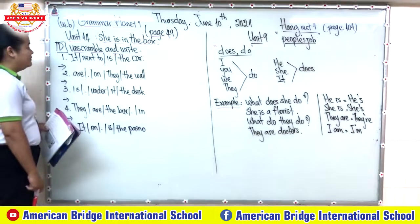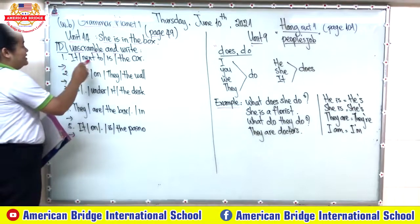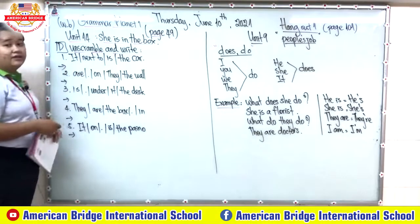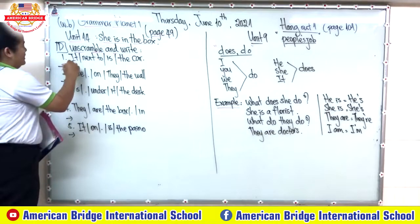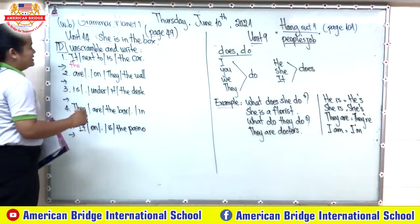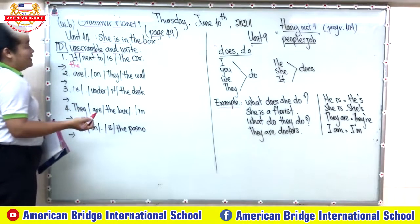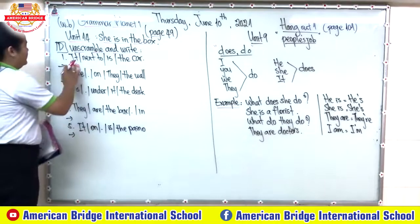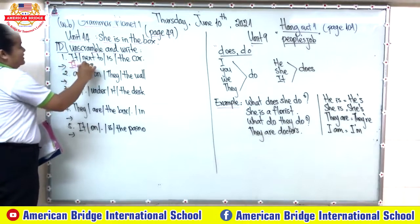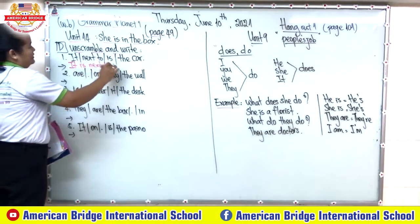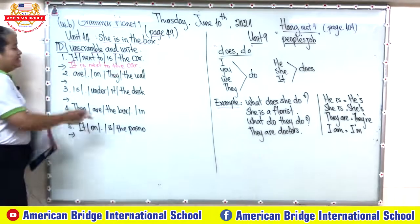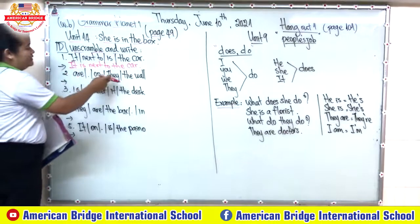Now let's look at number one. We have: 'it next to is the car.' We need to arrange that to the correct sentence. The car — what does it say? 'It is next to the car.' Right. Now let's move to number two.